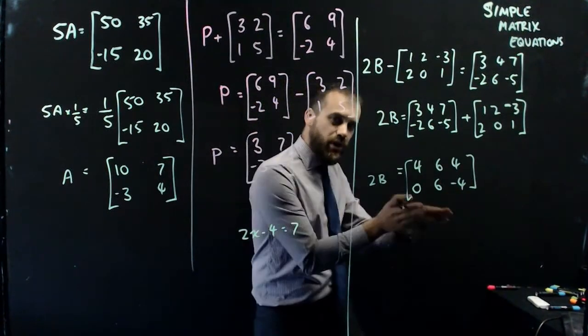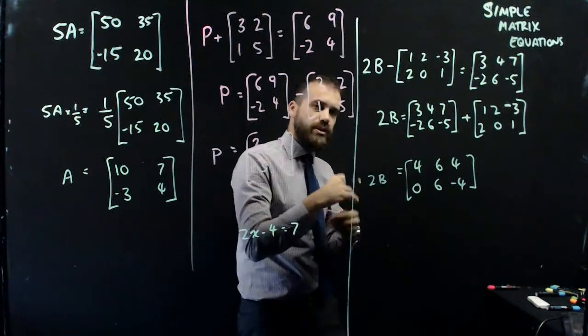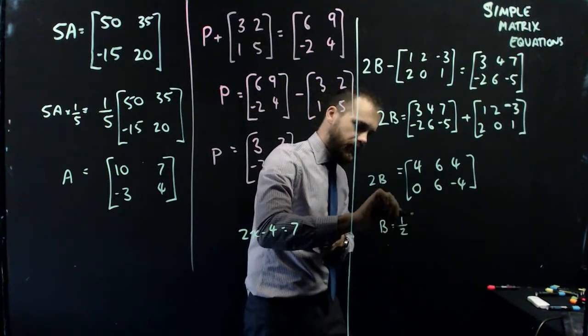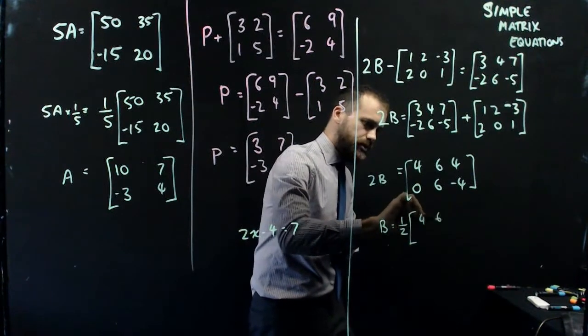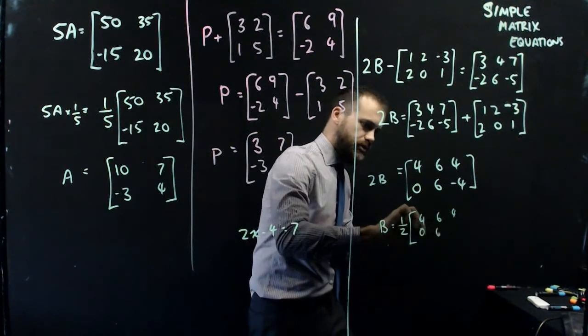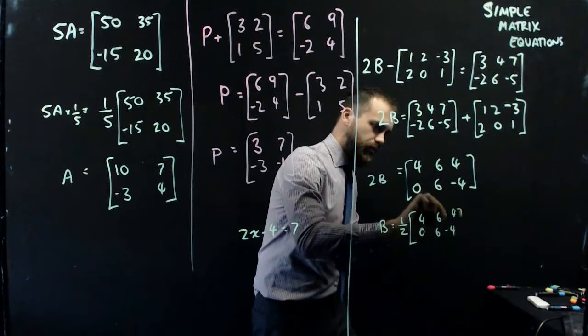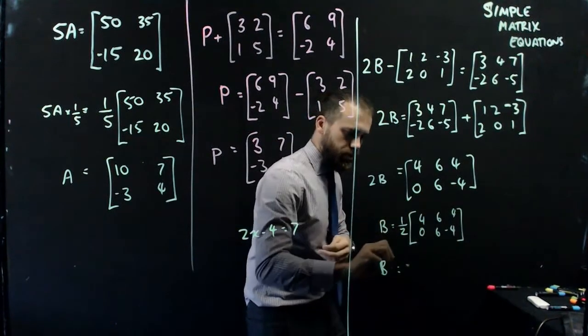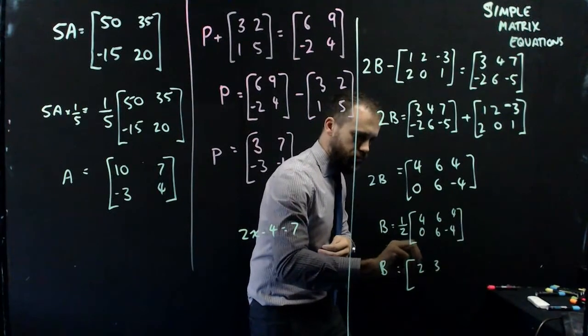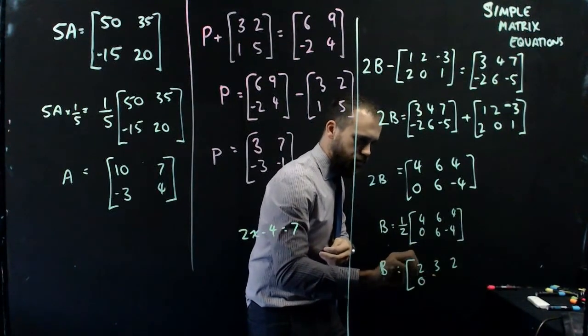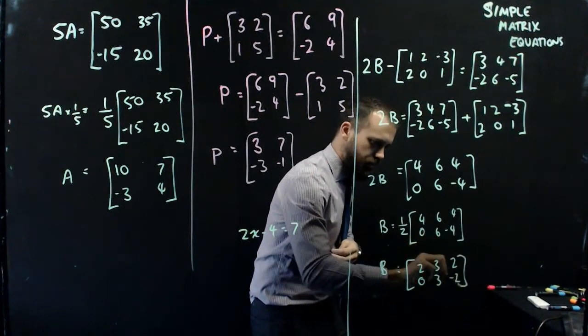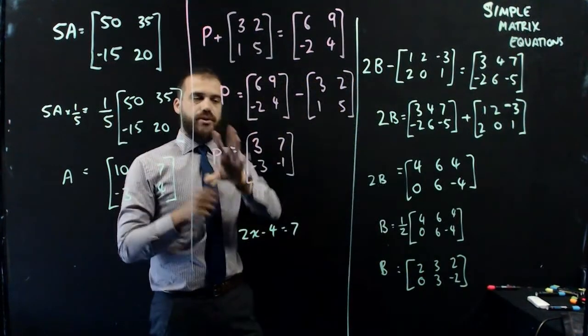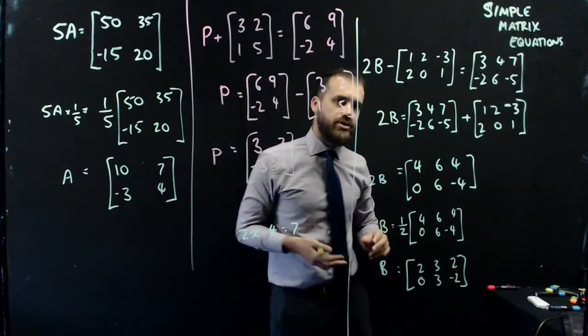And then we divide by 2, but we don't really divide by 2, we multiply by a half. So B equals a half times 4, 6, 4, 0, 6, negative 4, which means that B is equal to 2, 3, 2, 0, 3, negative 2. Again, that's solving fairly simple matrix equations there. One-steppers and there's a two-stepper there.